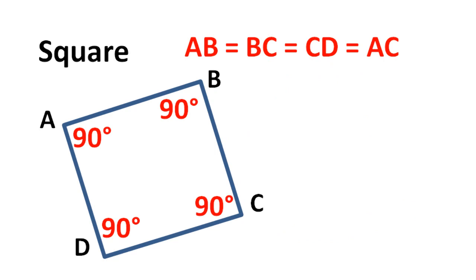Next we come to the square. A square is a parallelogram in which all the sides are equal to each other and all the internal angles are equal to each other. So we can say that a square is a rectangle in which all the sides are equal, or we can say that a square is a rhombus in which all the angles are equal.